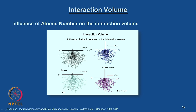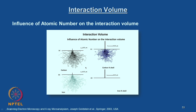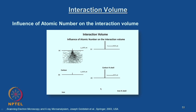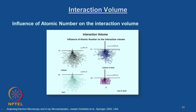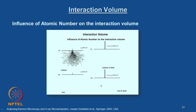Another important aspect is the influence of atomic number on the interaction volume. What you are seeing is carbon and iron — the kind of interaction volume one can achieve as predicted by numerical simulation. As the atomic number increases you can clearly see that the volume increases. One can appreciate the difference between a non-metal and a metal — the lateral width is spreading compared to the linear width — because the scattering cross section increases with higher atomic number.